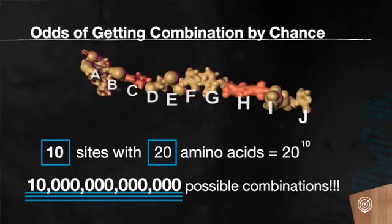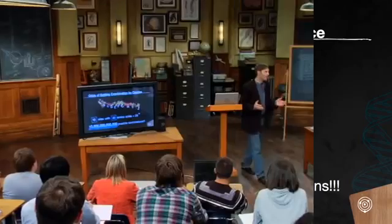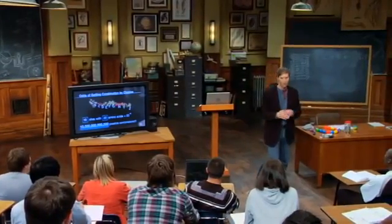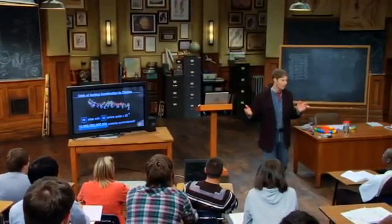But most proteins, even modest, shortish proteins, are 100 to 150 amino acids. The average length protein is maybe 300 to 400 amino acids. Can you see what's going to happen to these exponential numbers as far as the number of possible ways of combining the amino acids?